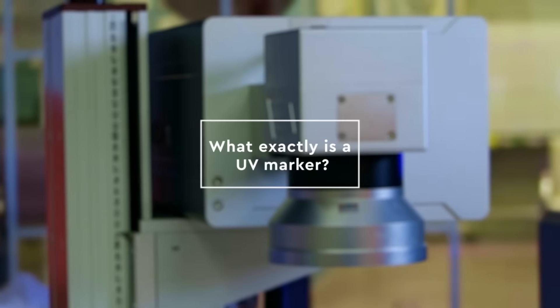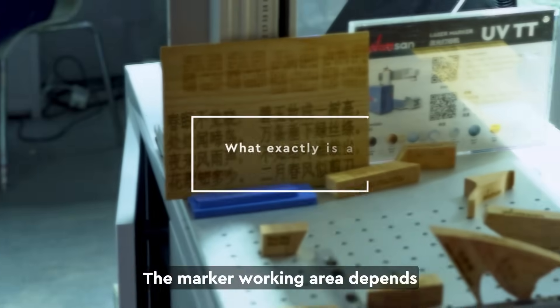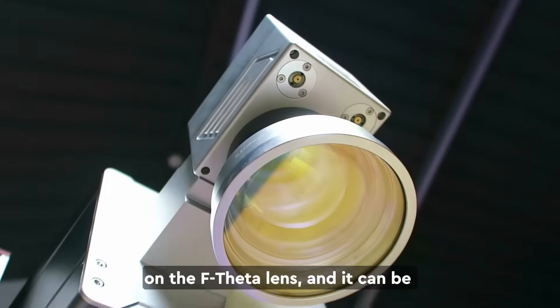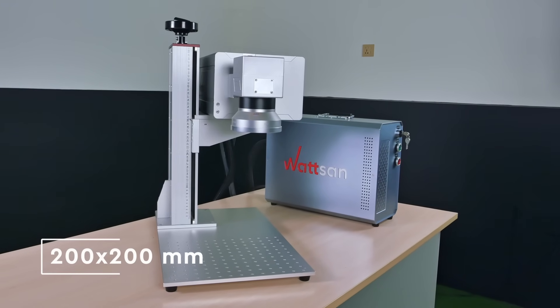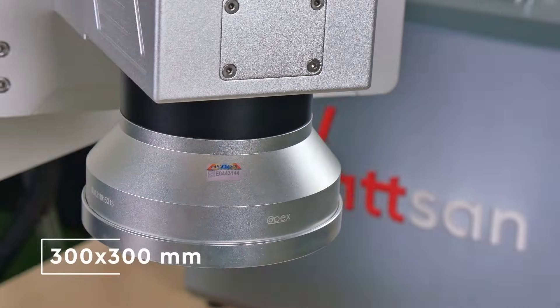What exactly is a UV marker? The marker working area depends on the F-Theta lens length, and it can be 110 by 110, 200 by 200, or 300 by 300 millimeters.